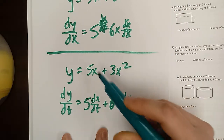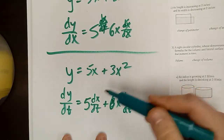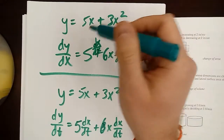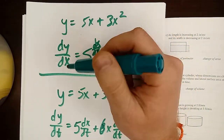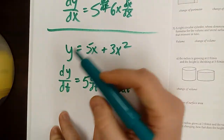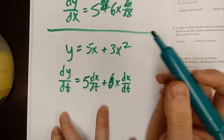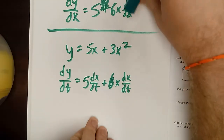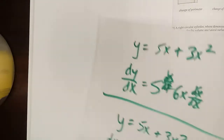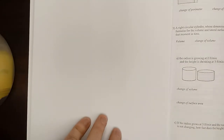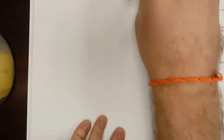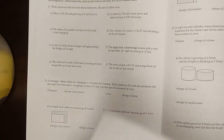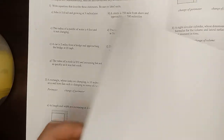This is because our variables are all going to be slaves to time. In the past, all of our variables have been a slave to X — whatever X does, everything else is affected. Now, whatever time does, everything else is affected. So that is one of the big shifts in our thinking that's going to happen, and this is because we're getting into application problems — some real-world places where we can see calculus.